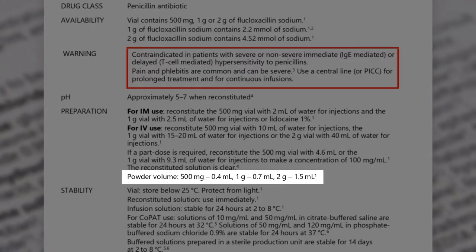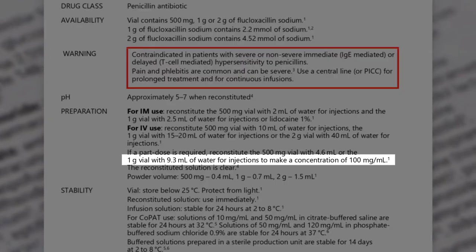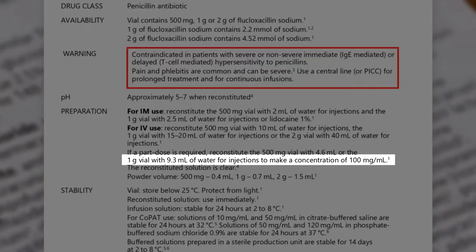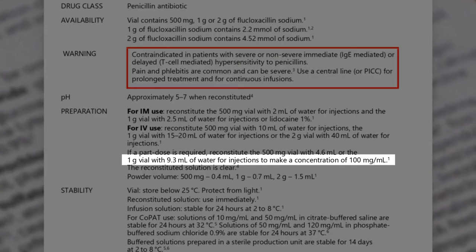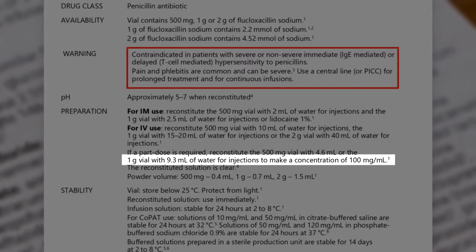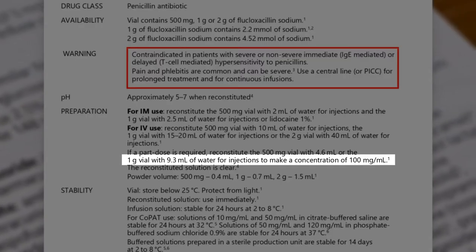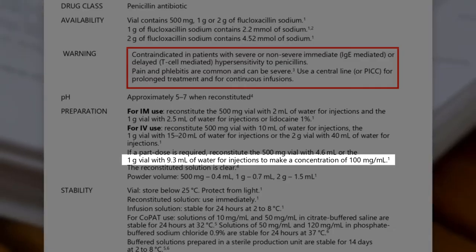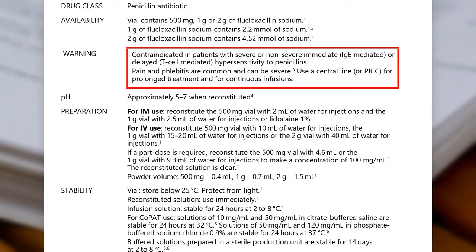In this case, the powder volume of the 1g vial is 0.7 ml. So if you add 9.3 ml of water for injections to the vial, the final total volume including the dissolved powder will be 10 ml, and the concentration will be 100 mg per ml. This is a nice even number that will help you correctly calculate the volume of the dose – for a dose of 750 mg of flucloxacillin, you will need 7.5 ml of the reconstituted solution. Always make sure there are no particles in the solution after it has dissolved, and that the solution matches the description provided. If there are particles or it is an unusual colour, you should discard the vial.